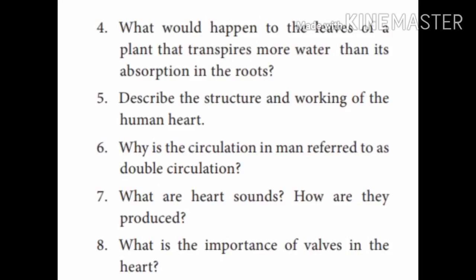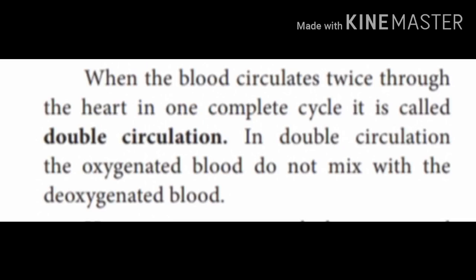Question six: Why is the circulation in man referred to as double circulation? When the blood circulates twice through the heart in one complete cycle, it is called double circulation — once for deoxygenated blood and once for oxygenated blood. In double circulation, the oxygenated blood does not mix with the deoxygenated blood. The key answer: blood passes twice through the heart in one complete cycle.